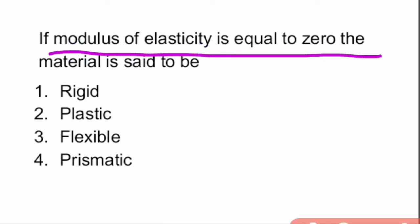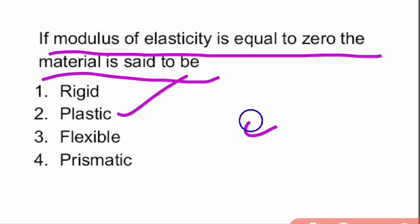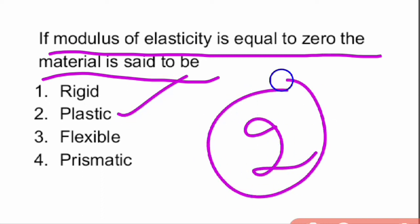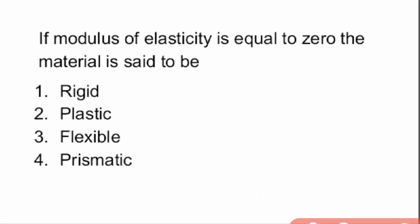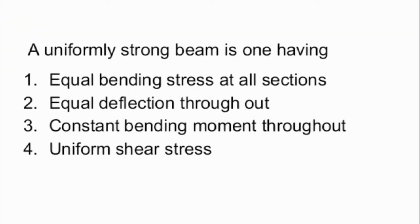Next question: if modulus of elasticity is equal to zero, the material is said to be what? If modulus of elasticity is equal to zero, the material is said to be plastic. Option two is the right answer.